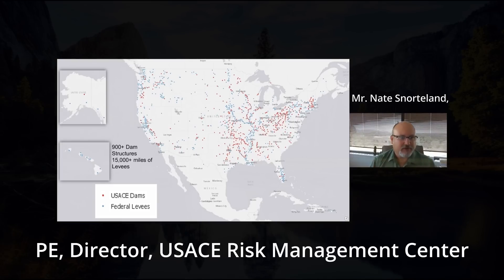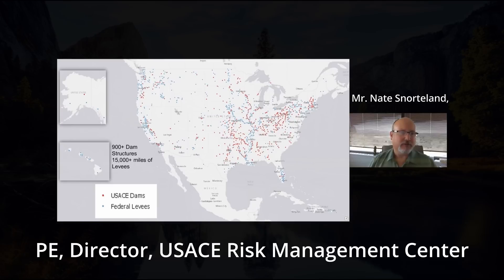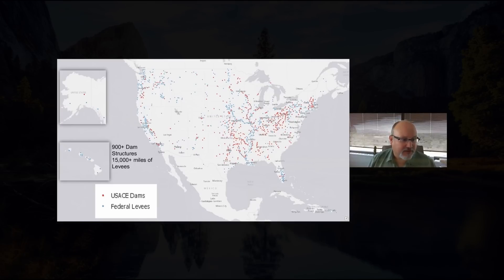We have more than 900 dam structures, which is like 740 dams, but there's a lot of other little ancillary structures associated with it. We have more than 15,000 miles of levees.